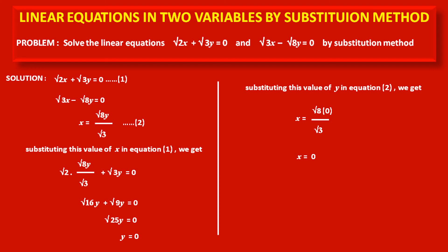Like this, in the case of irrational coefficients also, we can solve linear equations in two variables by substitution method. In this case, we get the solution as x is equal to 0 and y is equal to 0.